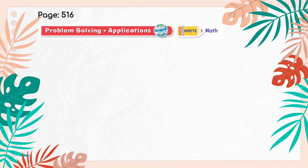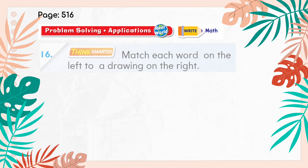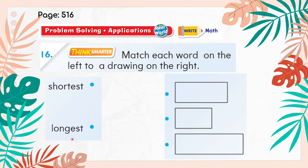On page 516, problem-solving applications, question 16: match each word on the left to a drawing on the right. We have two words: shortest and longest. Looking at the three drawings, we identify which is the shortest — that one gets matched to the word shortest. Then we identify the longest drawing and match it to the word longest. We draw lines from the words on the left to their corresponding drawings on the right.